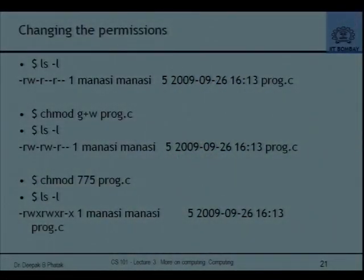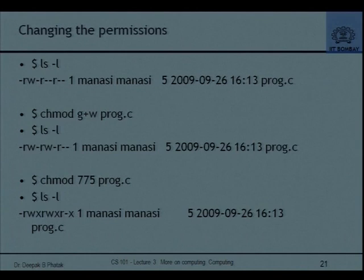The UNIX original authors — Kernighan, Ritchie, Thompson and others who wrote UNIX in 1972 at Bell Labs — designed compact commands because they did not want to type long things. Abbreviation is a forte of computer science people. So chmod is the command name. Permissions are: read/write/execute for owner, read/write/execute for group, read/no-write/execute for public — using the chmod numerical notation with octal digits.